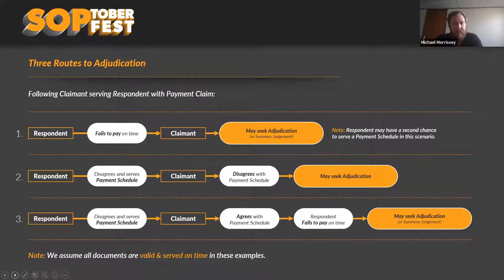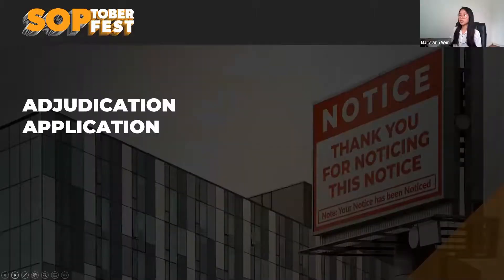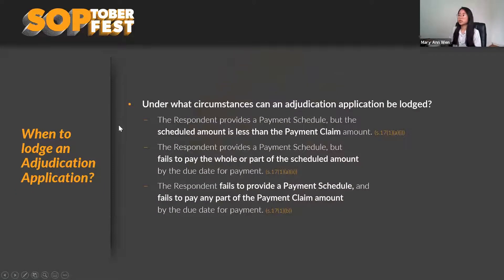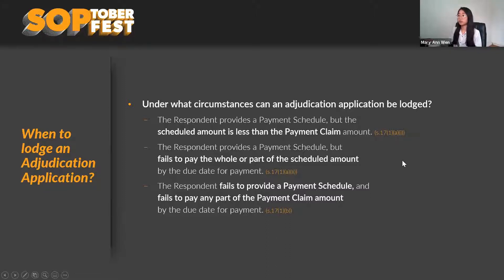Now touching on the adjudication application: when do you lodge one? Under section 17 of the Act there are three scenarios. The first is where a payment schedule has been provided but the schedule amount is less than the payment claim amount. There's no threshold on how much less it needs to be — theoretically even a dollar less than the claimed amount means you can adjudicate.